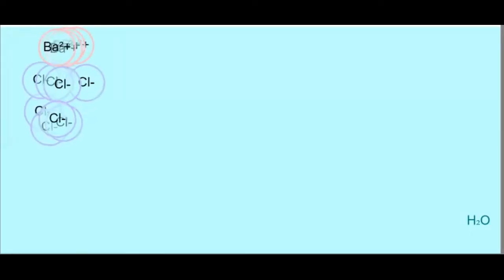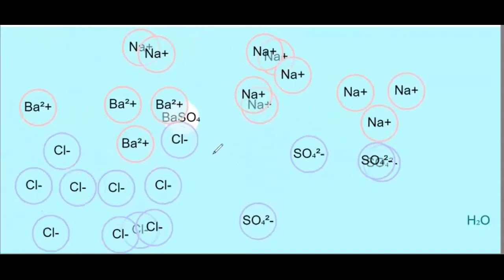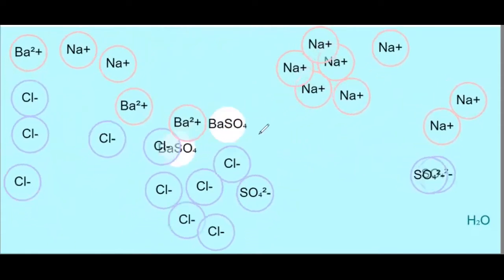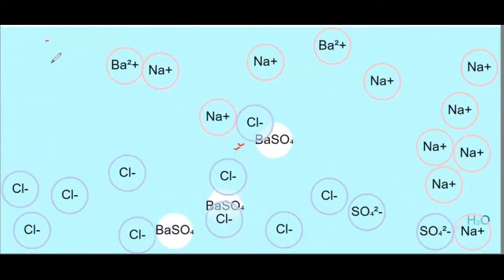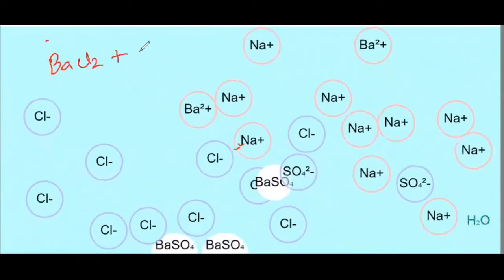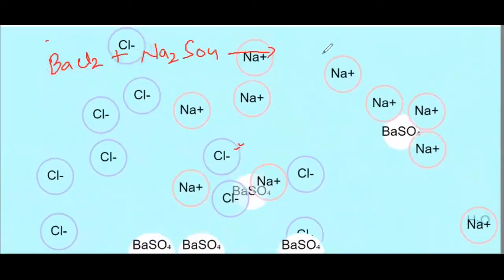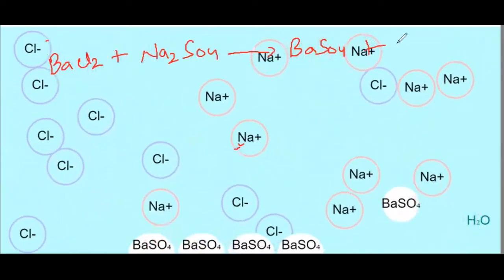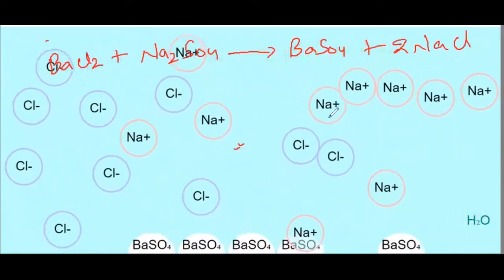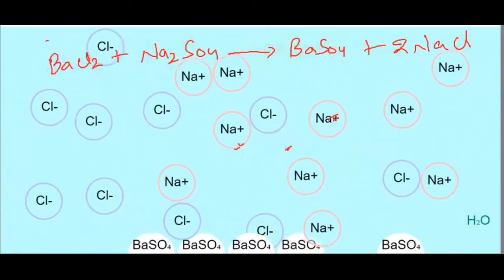Next reaction barium chloride versus sodium sulfate के बीच है। जब barium ion, sulfate के साथ interact करता है, तो white precipitate settle down हो जाता है — that is the formation of barium sulfate। Reaction: BaCl2 + Na2SO4 → BaSO4 + 2NaCl। Sodium ion और chloride ion already solution में available हैं।